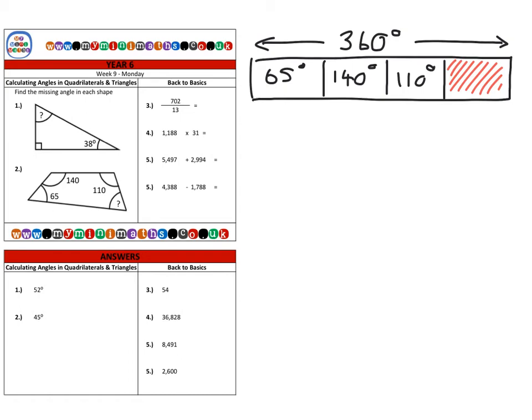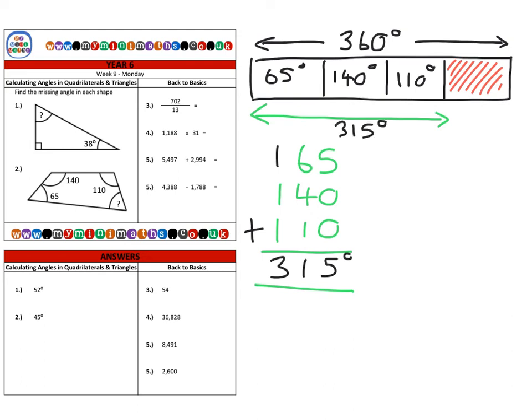The first thing we need to do is calculate the total of the three given angles. So we know that's 65, 140, and 110. Making sure that we line all our columns up in the correct positions. First of all, we have five plus zero and zero, of course, is five. Sixty plus forty is 100, plus ten is 110, carrying over into the hundreds column. And then we have 100 and 100 and 100, so that's 300. So the total of these three angles is 315 degrees.